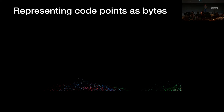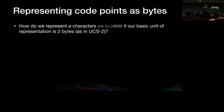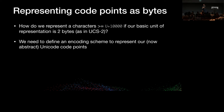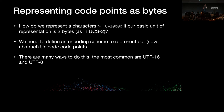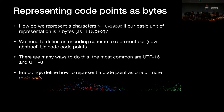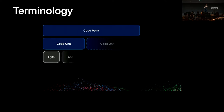So, representing code points as bytes. Now we have characters greater than hex 10000 — how do we represent them? We can't fit them into a two-byte quantity. We need to define an encoding scheme to translate our abstract Unicode code points into a sequence of bytes we can put in files or send over a network. There are many possible encoding schemes, but the most common are UTF-16 and UTF-8. This introduces a new concept: we use encodings to define how we represent a code point as one or more code units. A code point is the top-level concept in Unicode, represented by one or more code units, which may themselves be represented by one or more bytes.